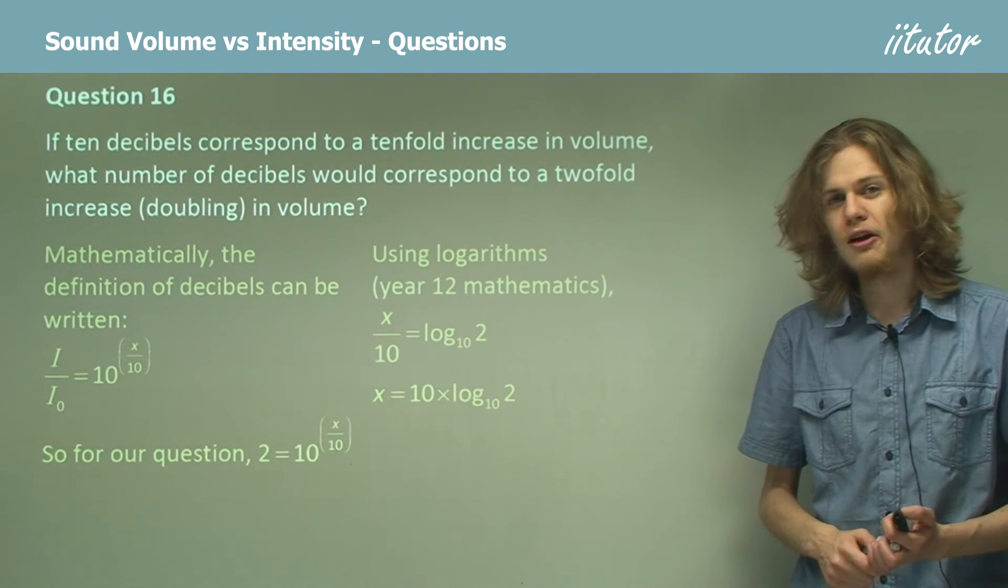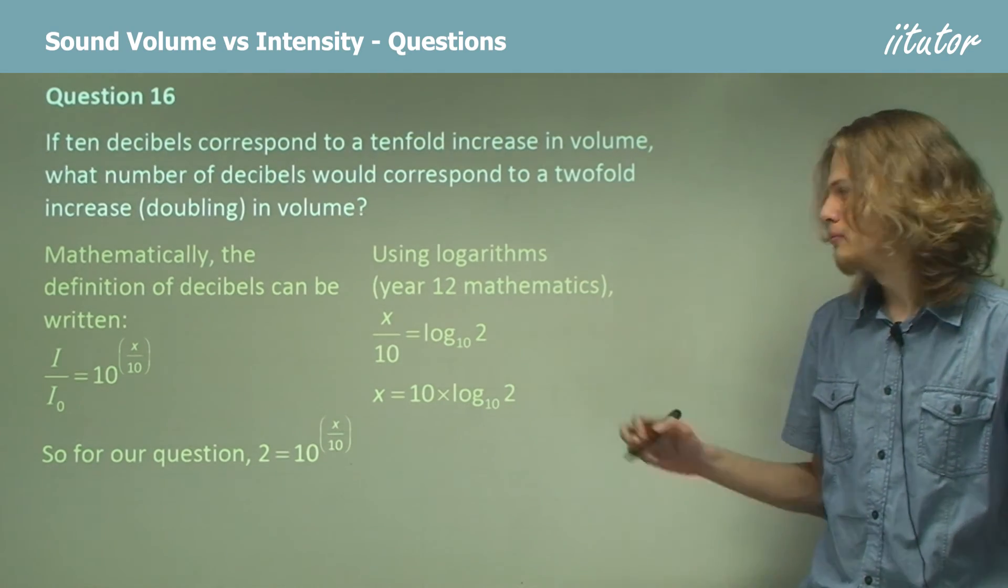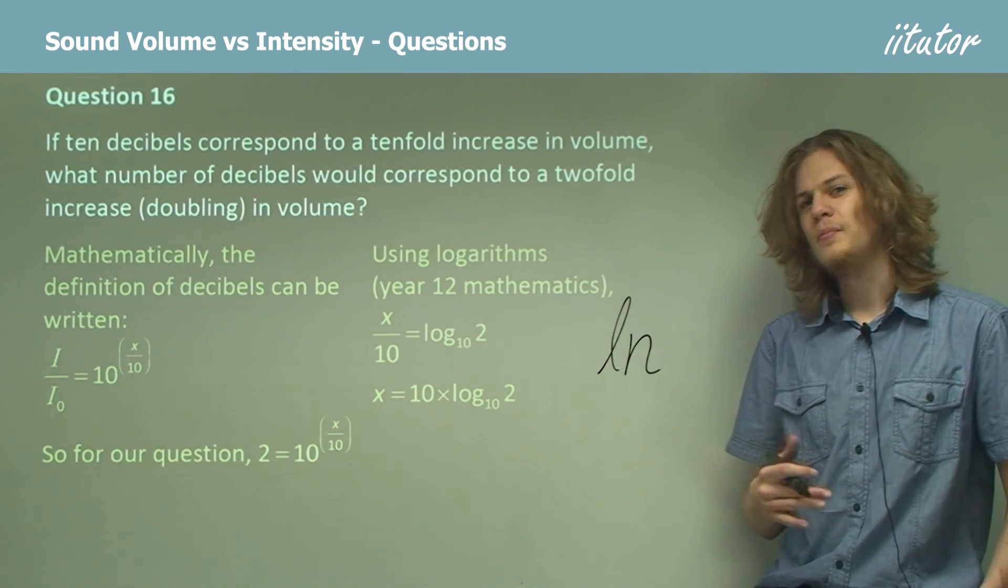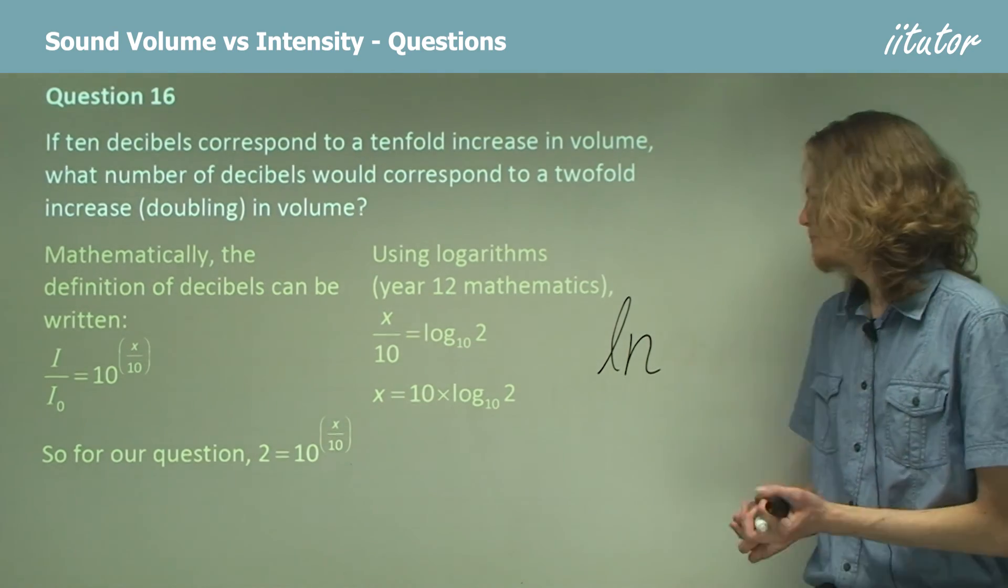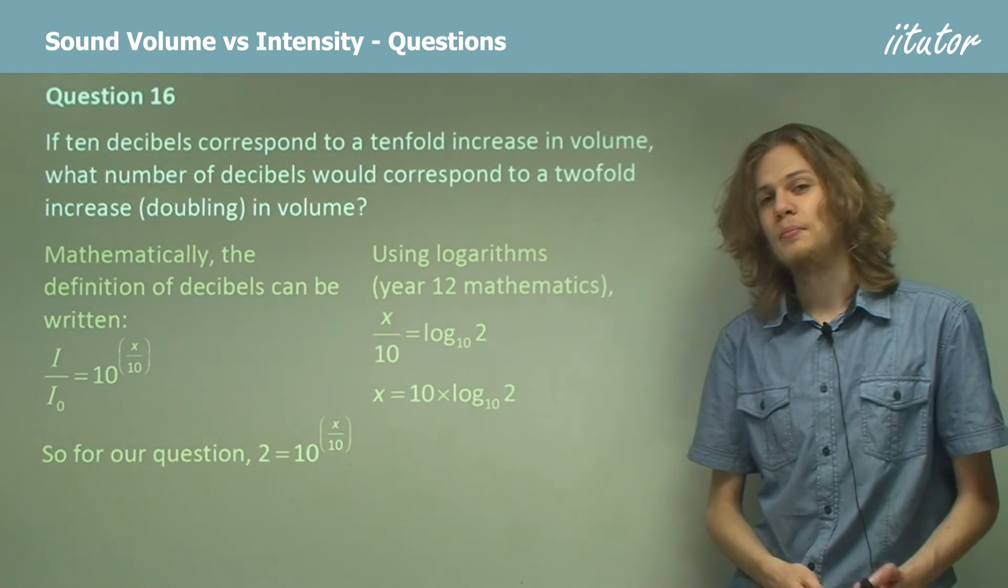If you use the log button on your calculator, by default it's set to log base 10. There's another log button called ln, which means the natural log, but that has a base that isn't 10. You'll learn a bit more about it later.